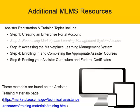Additional MLMS resources. Assister registration and training topics include: Step 1, Creating an Enterprise Portal Account; Step 2, Requesting Marketplace Learning Management System Access; Step 3, Accessing the Marketplace Learning Management System; Step 4, Enrolling in and completing the appropriate Assister courses; Step 5, Printing your Assister Curriculum and Federal Certificates. These materials are found on the Assister Training Materials page at HTTPS://Marketplace.CMS.gov/Technical-Assistance-Resources-Training-Materials-Training.HTML.